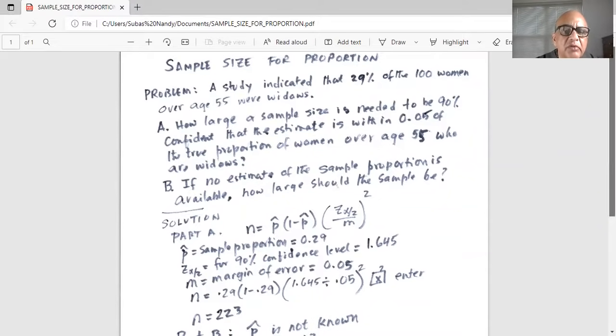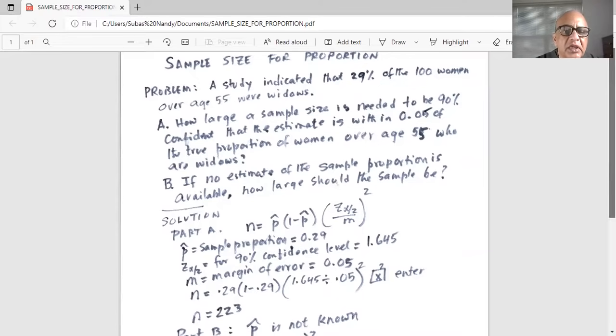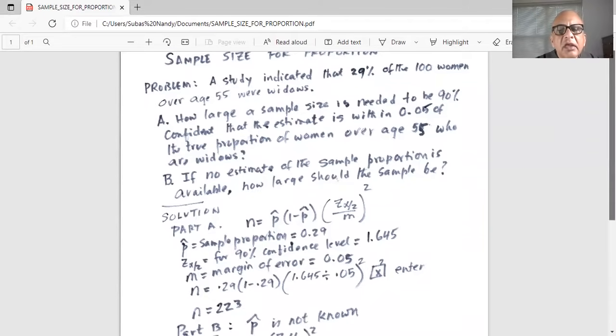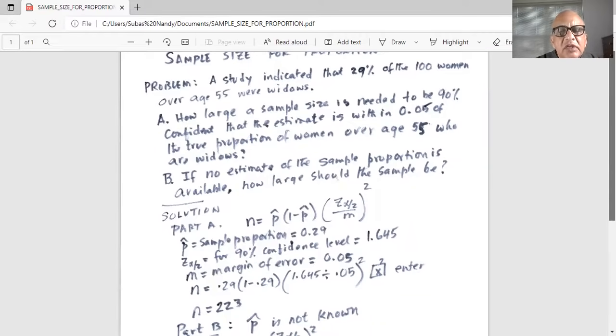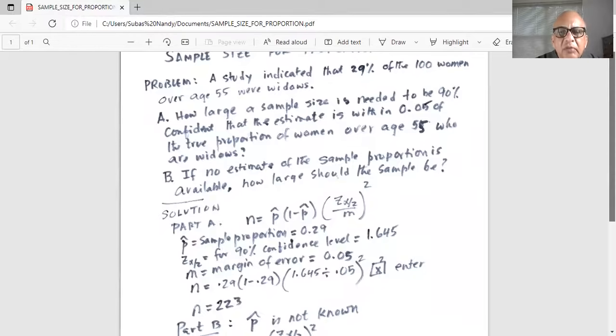So we have information about sample proportion. We want to calculate the sample size necessary to be 90% confident and the margin of error is 0.05. So p hat sample proportion is 0.29 and we want to be 90% confident in our calculations. So z alpha by 2 for 90% confidence level is 1.645 and we also know the margin of error.